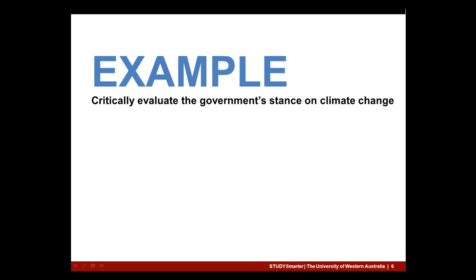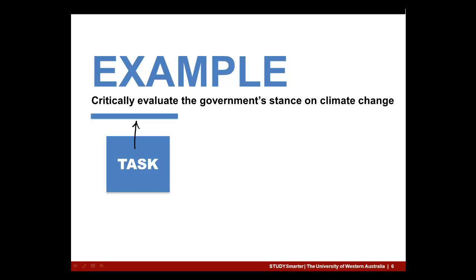There are three main components to any assignment question. The first is task words, which tell you how to approach the question. Here the task is to critically evaluate, which involves two things: critical thinking and making a judgement. To do this, you need to take different viewpoints into consideration and look at the topic from a number of different angles, discussing positive aspects, negative aspects, and anything unknown.